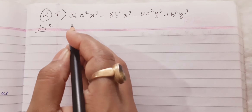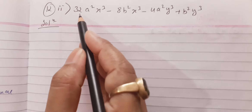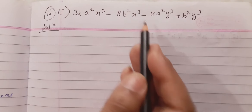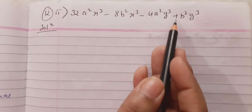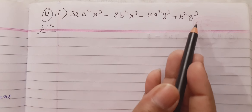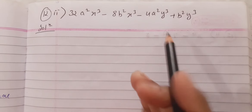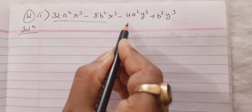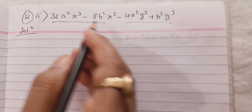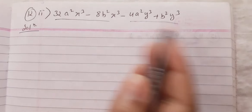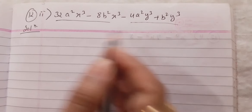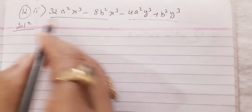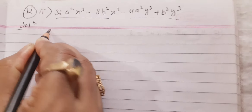Our first question is 12 second: 32a²x³ - 8b²x³ - 4a²y³ + b²y³. What I was thinking is I will divide this question into two parts. From the first two terms I will take something common, and from the second two terms I will take another common factor.